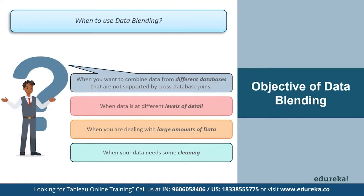The first condition is when you want to combine data from different databases that are not supported by cross-database joins. Cross-database joins do not support connections to cubes — take Oracle Essbase for instance — or some extract-only connections like Google Analytics. In this case, set up individual data sources for the data you want to analyze and then use data blending to combine the data sources on a single sheet.